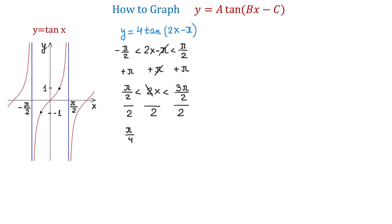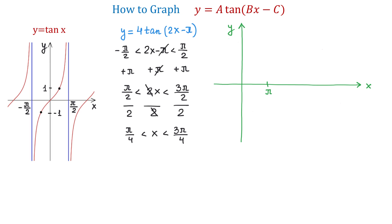Then in the middle, the 2s cancel and we have x. To the right, 3 pi over 2 divided by 2 is 3 pi over 4. Now these are the new asymptotes for our function. On the x-axis we will have pi over 4, then pi over 2, then 3 pi over 4, and we will draw the new asymptotes at pi over 4 and 3 pi over 4. From the graph we see that the x-intercept is at pi over 2 because this is the point exactly between pi over 4 and 3 pi over 4.